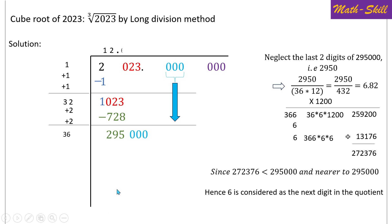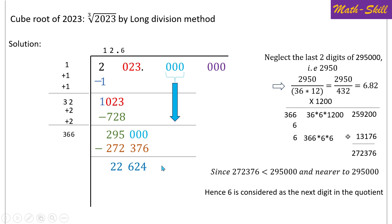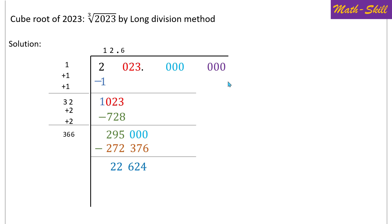We take 6 as the next digit, and the divisor becomes the three-digit number 366. Subtracting 272376 from 295000 gives a remainder of 22624. We bring down the next group of three zeros, making the new number 22624000.